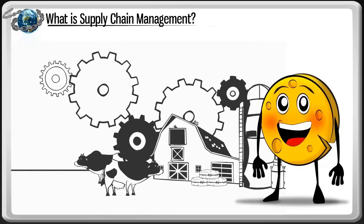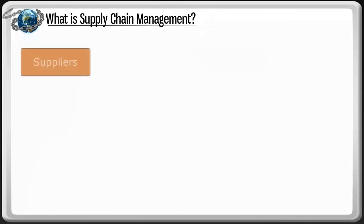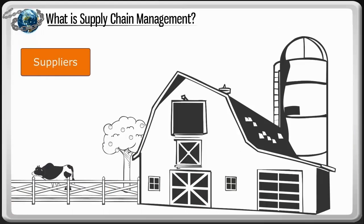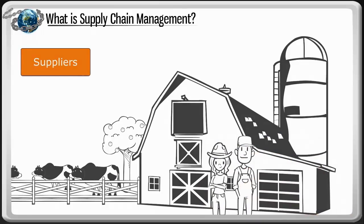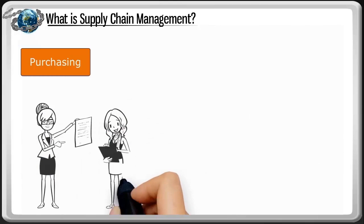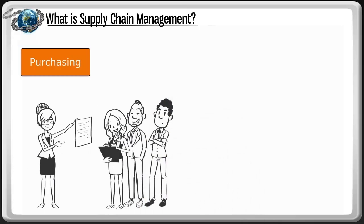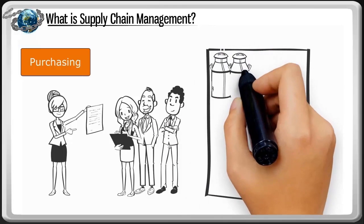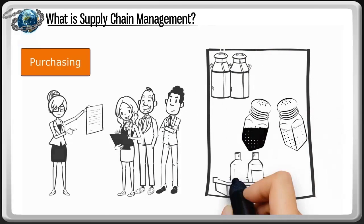Let's start with the suppliers who provide all of the raw materials. It all starts with the dairy farmers who raise and milk the cows. They provide the milk. The purchasing team coordinates purchases from these and other suppliers who provide additional cheese-making ingredients like milk, salt, rennet, and whey.